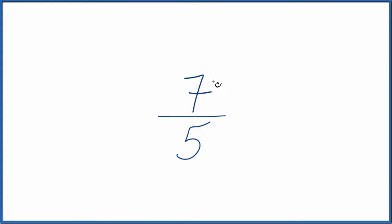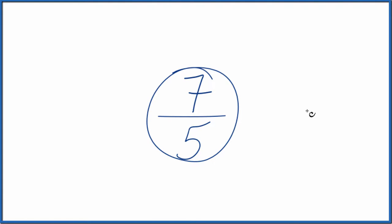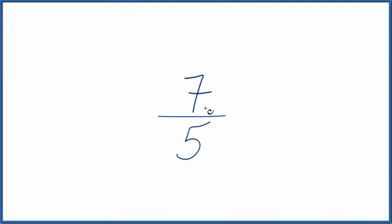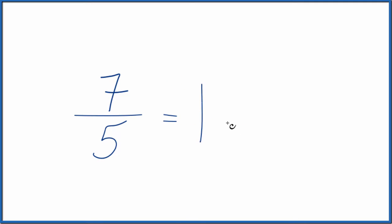Let's write the fraction 7 fifths as a mixed number in lowest terms. Here's how we do it. We're going to divide 7 by 5. 5 will go into 7 just one time and we have a remainder of 2. So 1 times 5, that's 5, plus 2, that gives us 7.